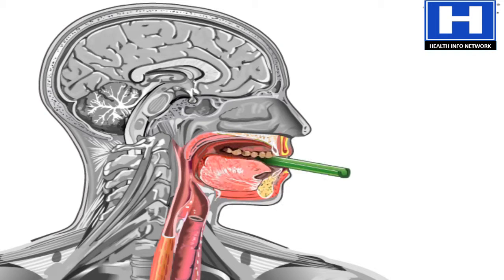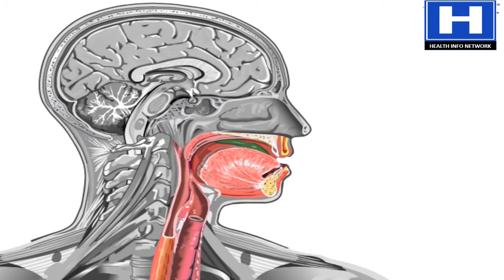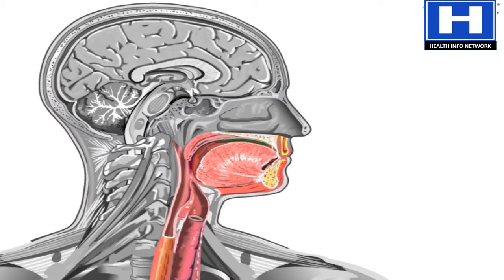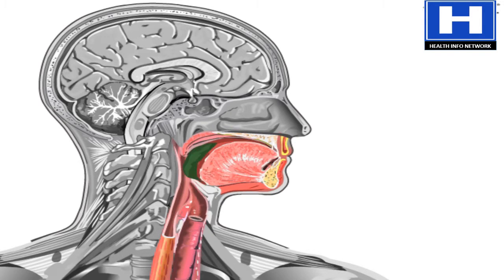The teeth grind and chop food into tiny pieces, while the glands in the mouth moisten it with saliva. Then the tongue pushes the moistened food, or bolus, to the back of the throat and down into the esophagus, which leads to the stomach.